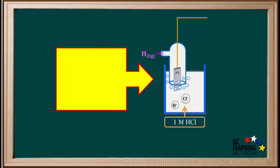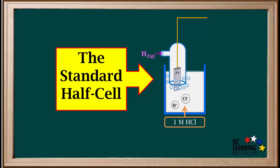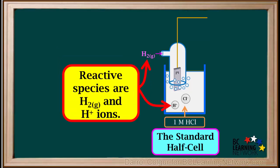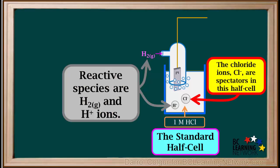This particular half cell is very important. It is called the standard half cell. The reactive species in the standard half cell are H2 gas and aqueous H⁺ ions. The chloride ions, Cl⁻, are spectators in this particular half cell.